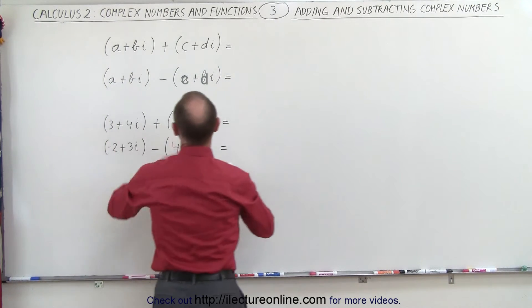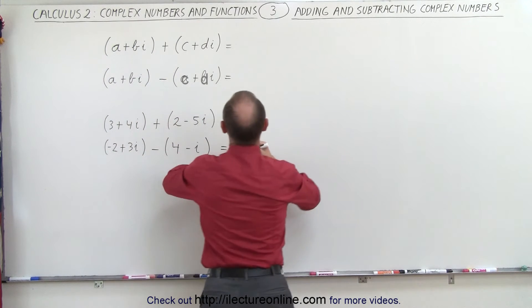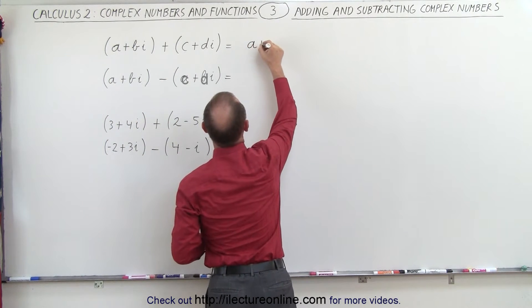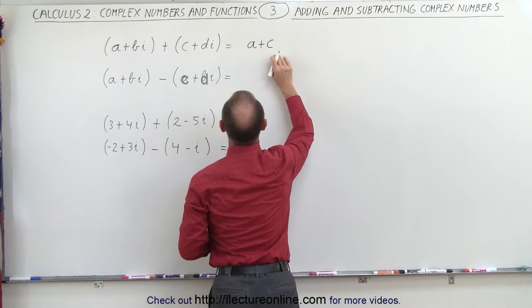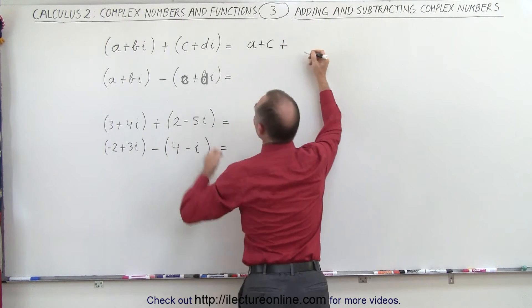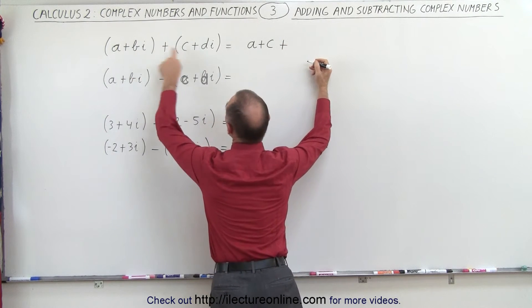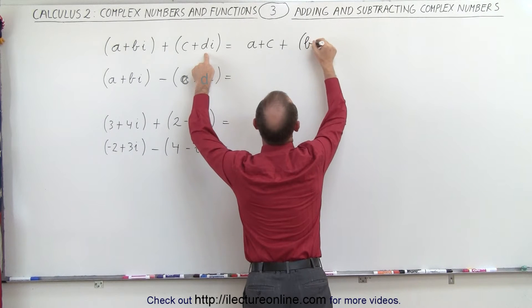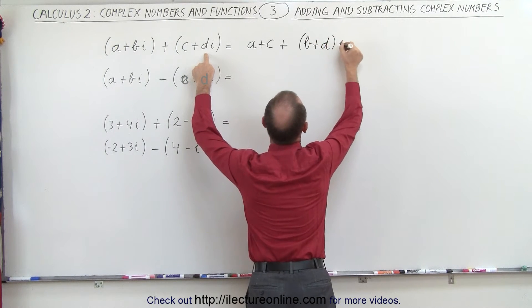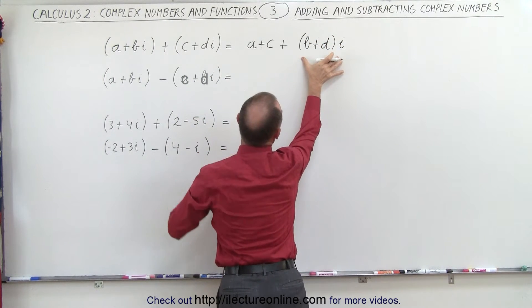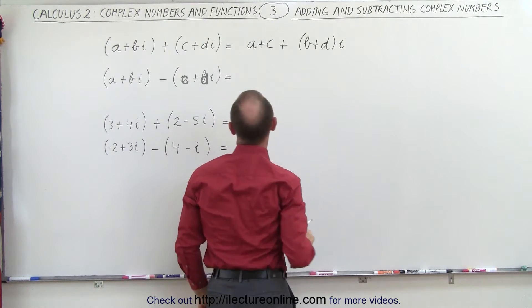And so this is how it works. So we go a plus c, and that becomes the real part of the sum, plus, then we have the imaginary part, b plus d, multiplied times i. So this is the imaginary part of the sum, and this is the real part of the sum.